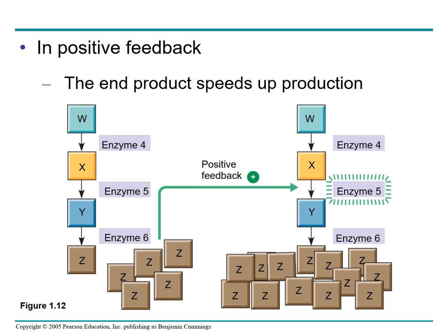Another type of feedback is positive feedback, where an end product speeds up its own production. An example is the clotting of blood in response to injury. When a blood vessel is damaged, structures in the blood called platelets begin to aggregate at the site. Positive feedback occurs as chemicals released by the platelets attract more platelets. The platelets pile up and initiate a complex process that seals the wound with a clot.